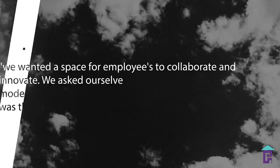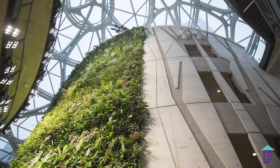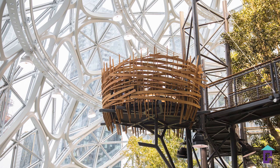Lastly, The Spheres in Seattle — a gigantic and beautiful building that serves as Amazon's hybrid greenhouse, conservatory, and a vibrant engaging office space. Amazon's Vice President noted: 'We wanted a space for employees to collaborate and innovate. We asked ourselves what is missing from the modern office. We discovered that missing element was a link to nature.' The building features a green wall going up to 65 feet, lining a staircase that climbs nearly to the top of the 90-foot-tall middle dome.